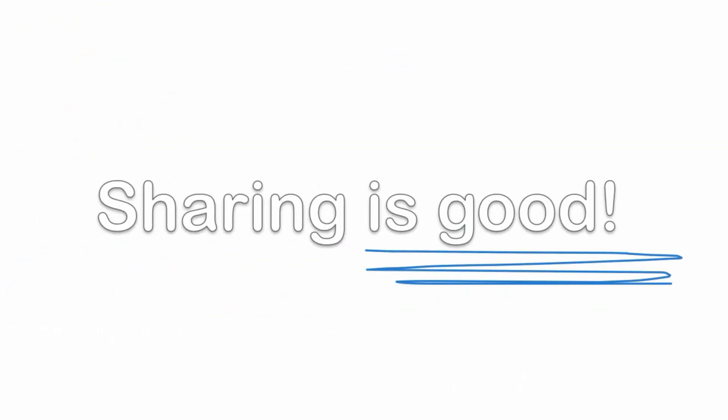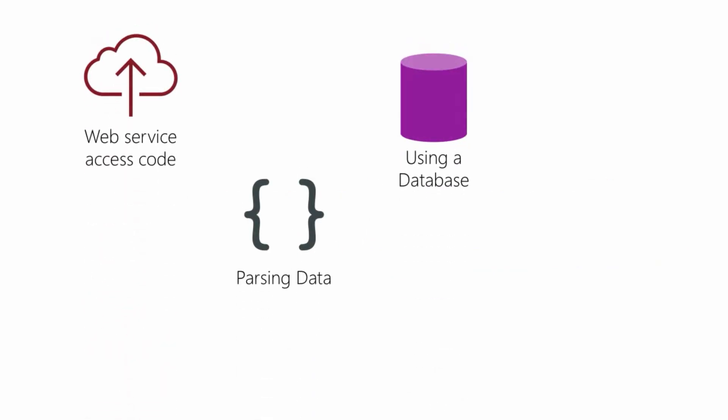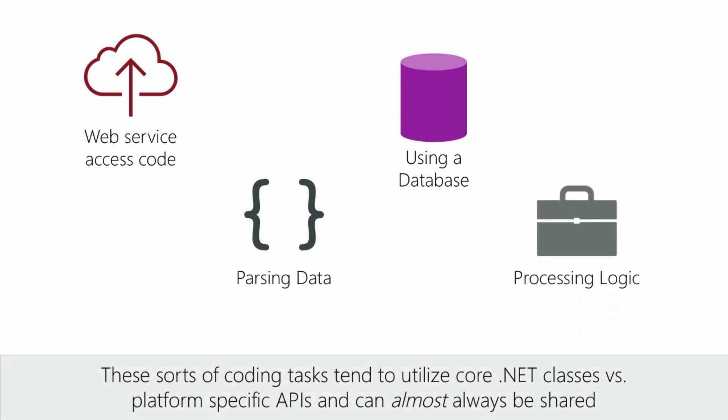Sharing is good, so what can we share? Generally speaking, any time you write a method which does not depend on the platform, you can potentially share it. This includes your business or processing logic, parsing operations, web service access code, database work, and even working with asynchronous tasks. Notice how none of these are tied to platform operations — they all depend primarily on core .NET features that are usable no matter what type of application you're building.